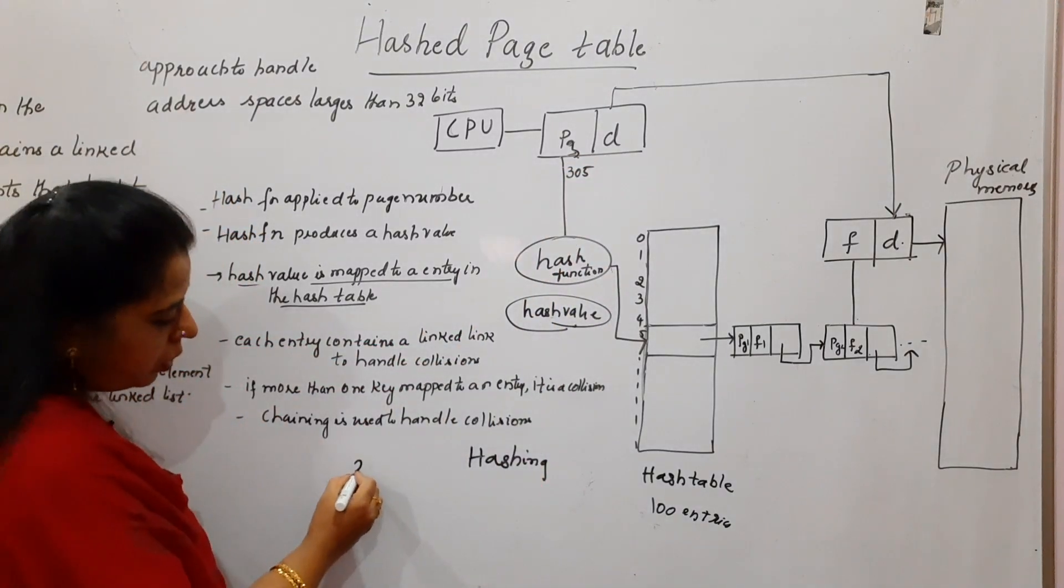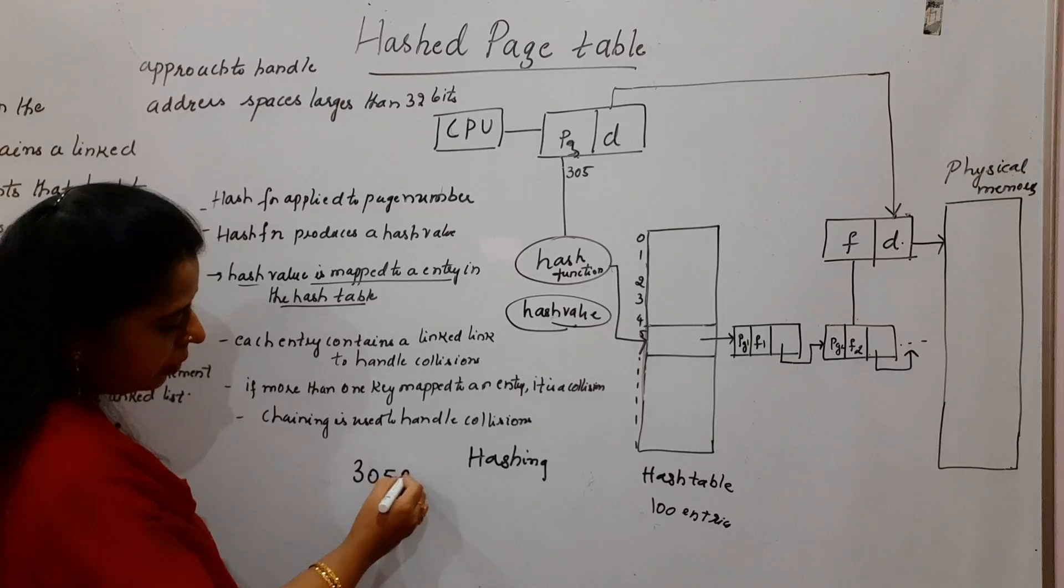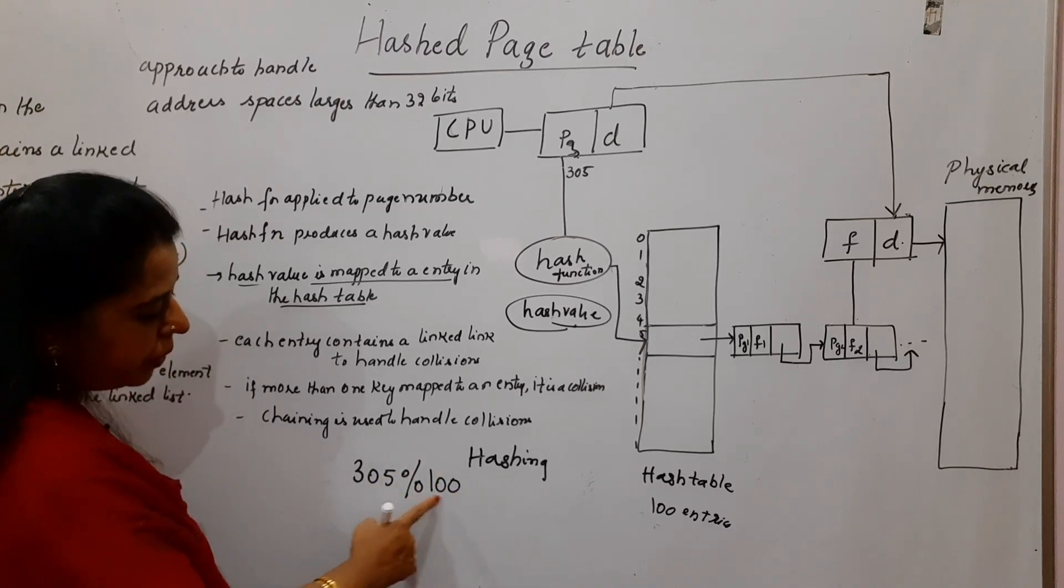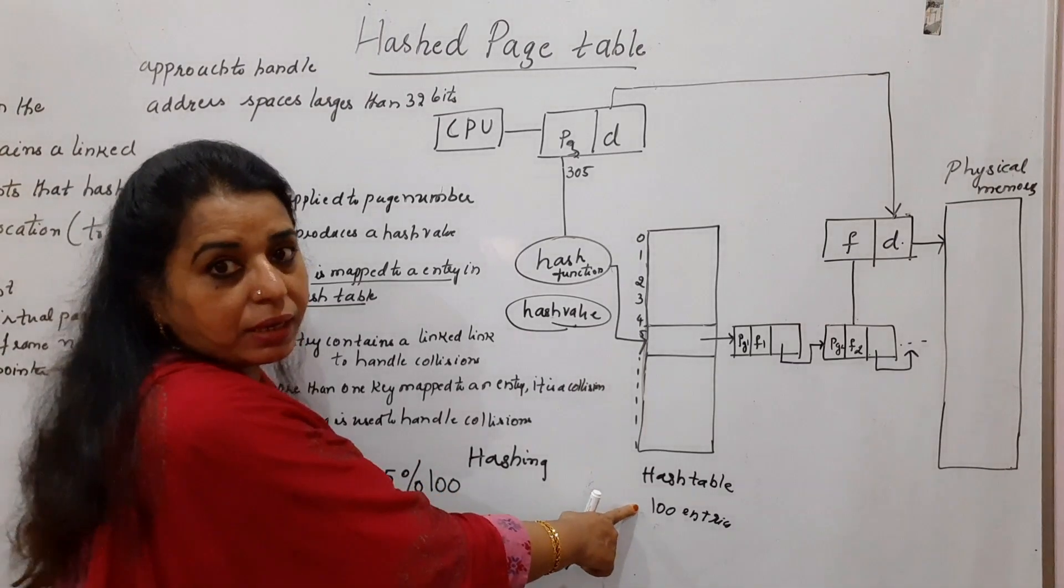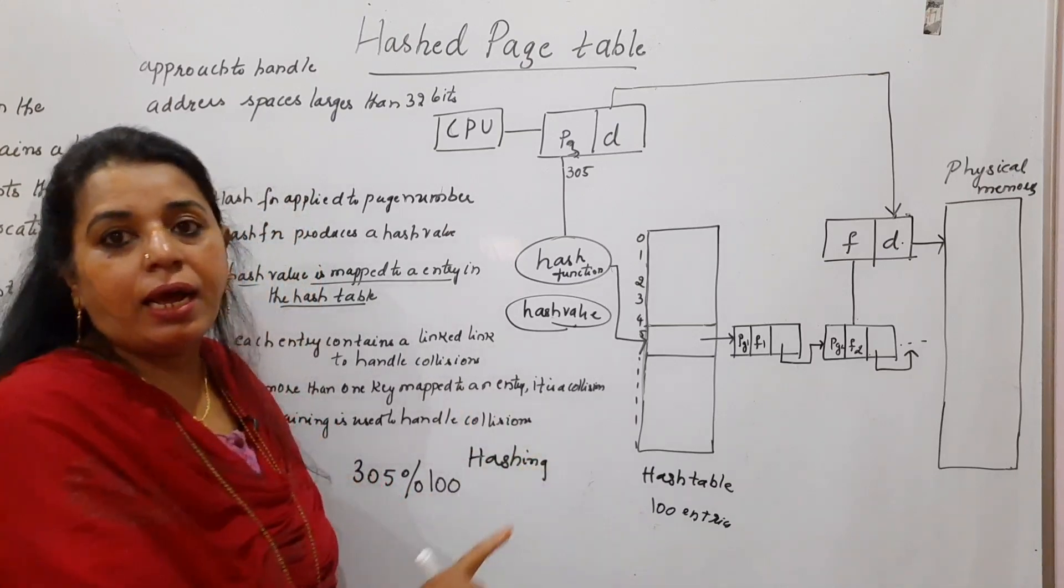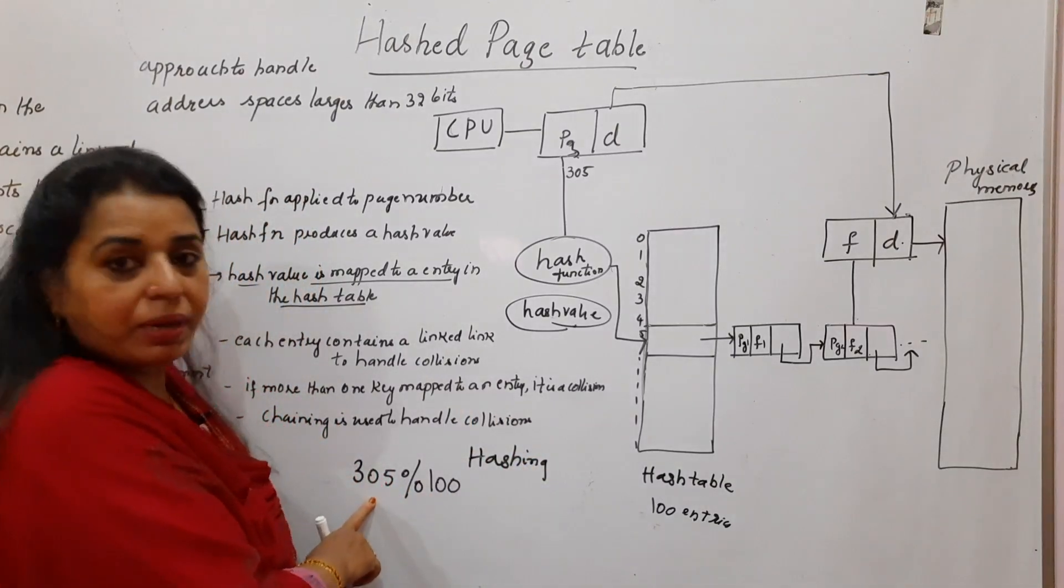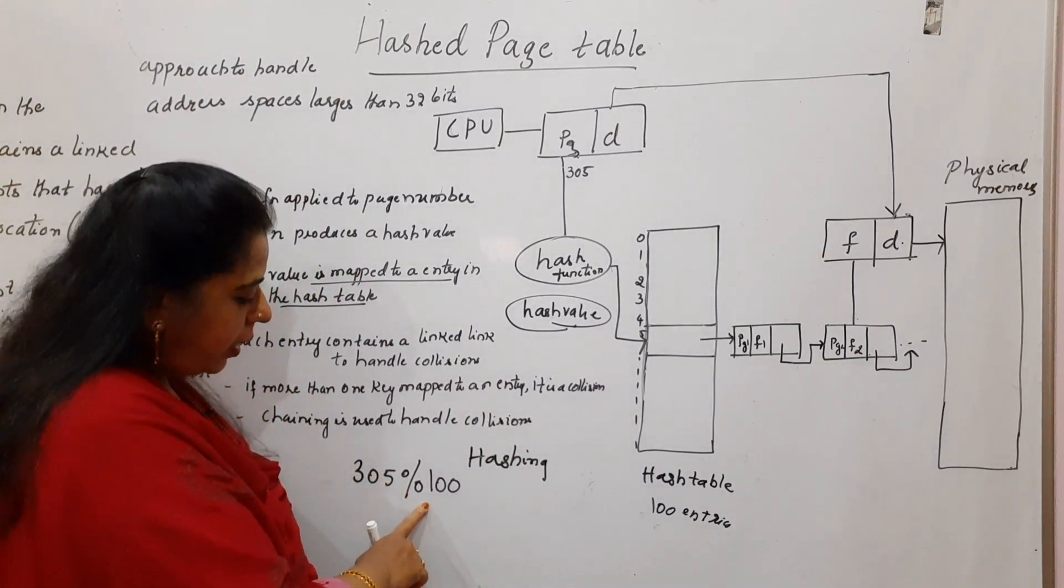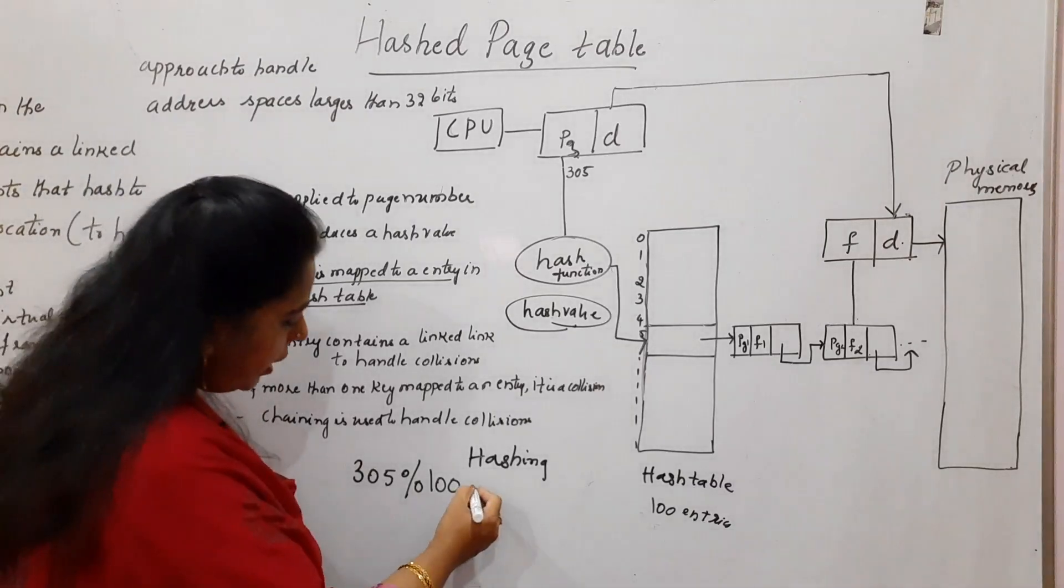And the page number that is generated in the logical address is 305, let us assume. So when you perform the modulo operation, 305 modulo of how many? You are going to do the modulo operation with the number of entries that are present in the hash table. How many entries are there? 100 entries are there. So page number is 305. 305 modulo operation with 100 will give you 5.